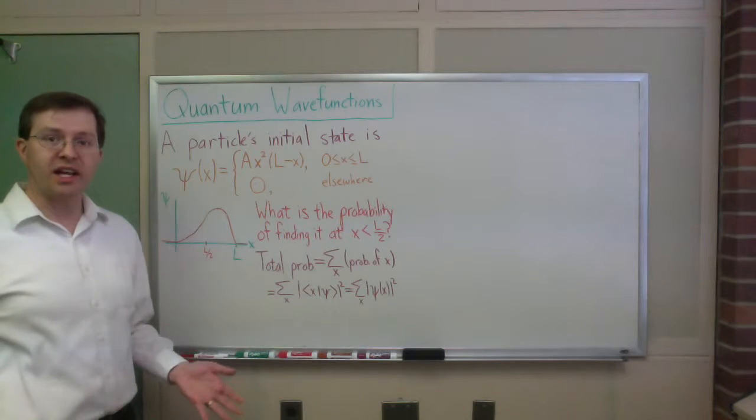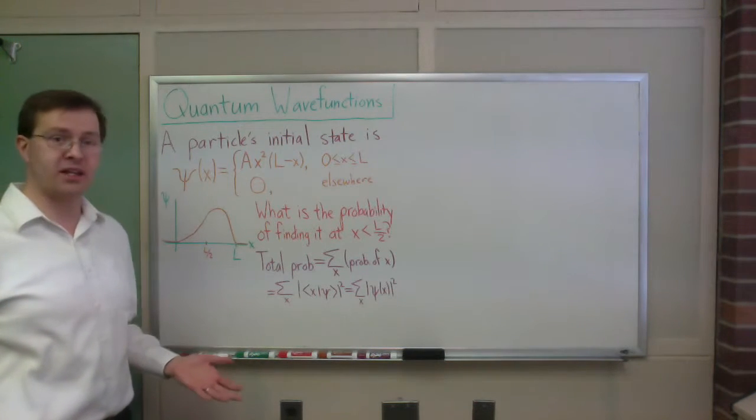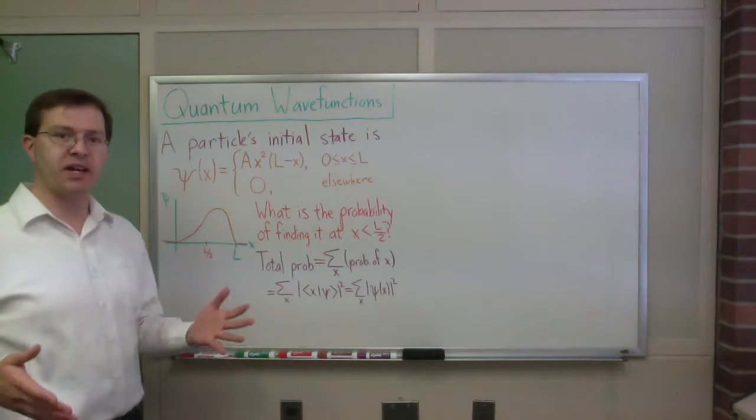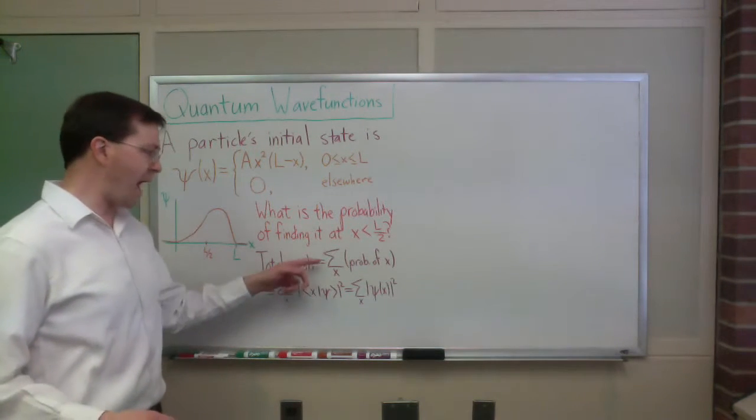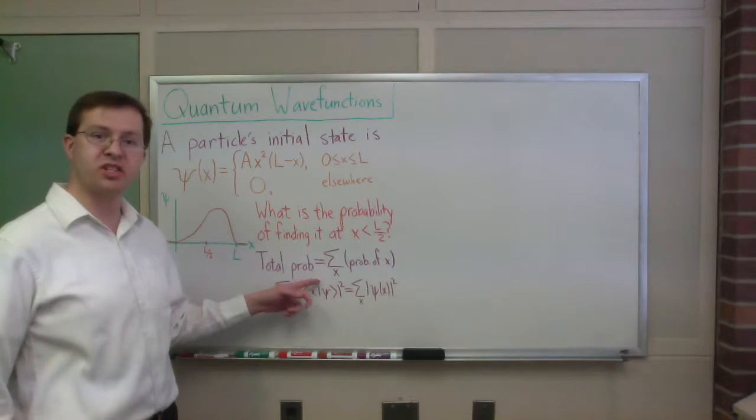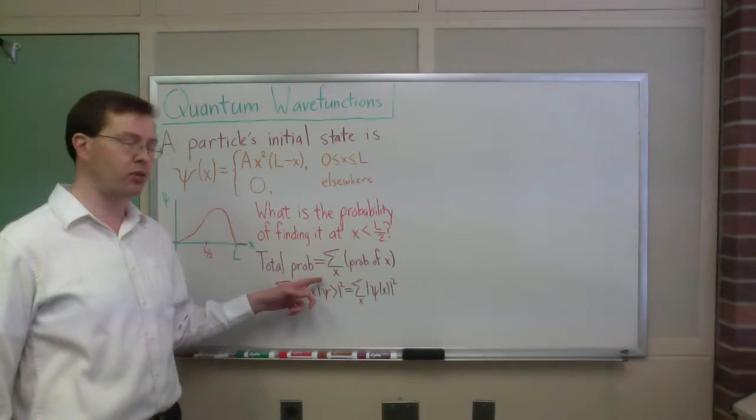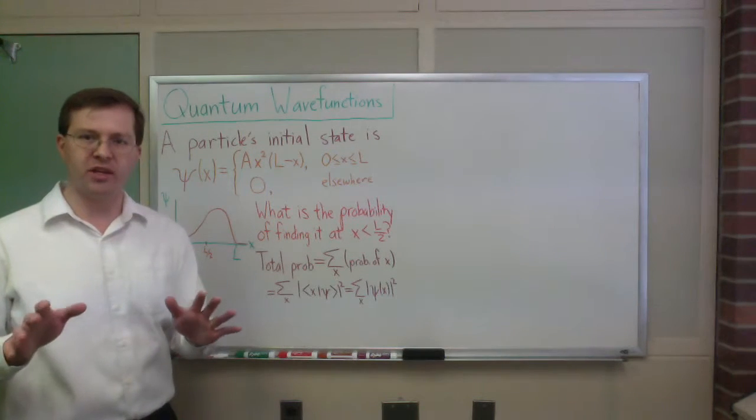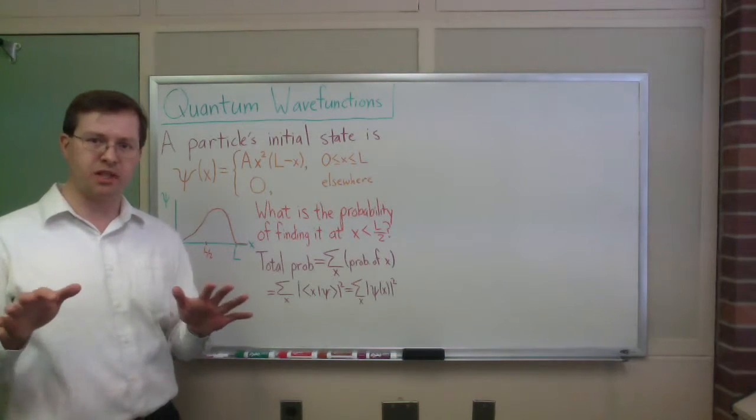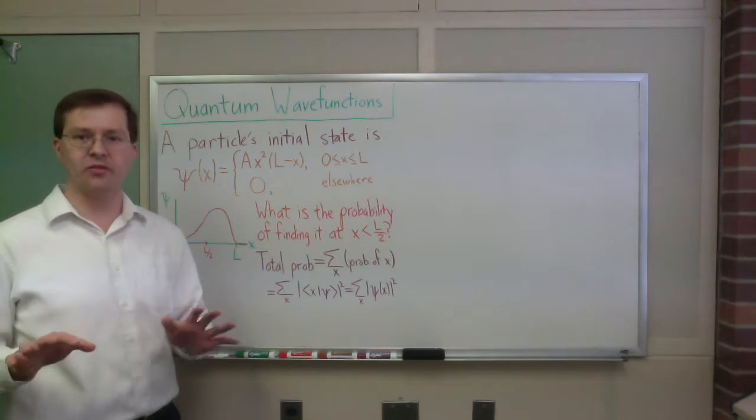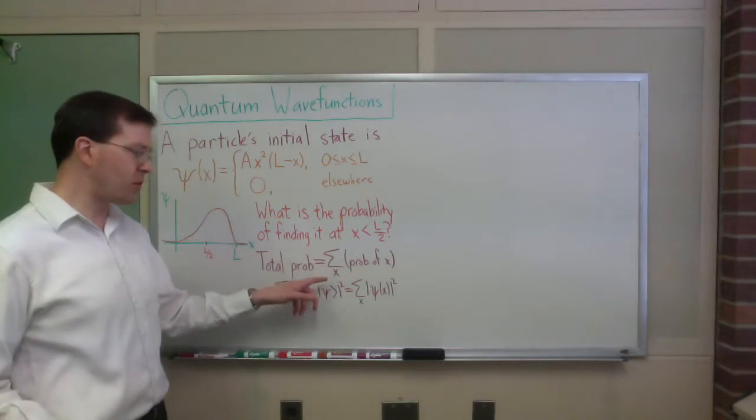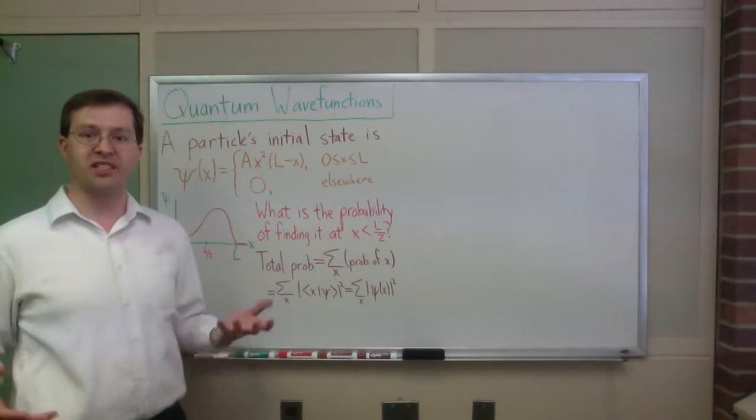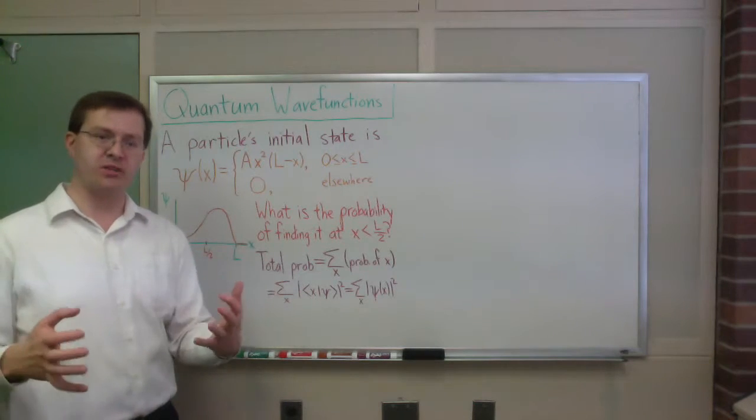We can talk about standard quantum mechanical questions. In quantum mechanics, the total probability, you're adding up probabilities of a range of possibilities. The total probability is you add up, you sum over all possible positions x that you can find this particle, and you add up the probability of being at each position. There's a little bit of fibbing here about continuous versus discrete systems that I'm brushing over. So sum over possible measurement outcomes x, add up the probabilities of x. That's the total probability of a collection of measurements.